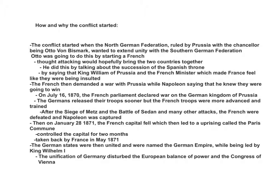He thought attacking would hopefully bring the two countries together. He did this by talking about the succession of the Spanish throne, by saying that King William of Prussia and their French minister, which made France feel like they were being insulted. The French then demanded a war with Prussia about Napoleon, saying that he knew they were going to win.